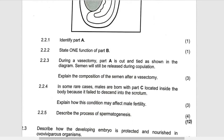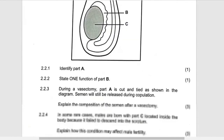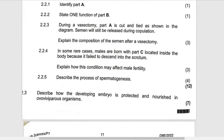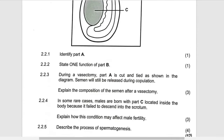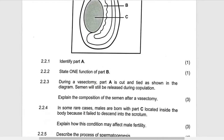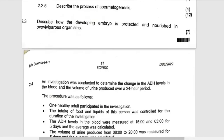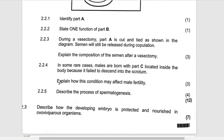Why? Because they won't be transported. And if they are not transported, what will be contained in the semen will only be the fluid coming from the accessory glands. The accessory glands are the prostate gland, Cowper's gland, and seminal vesicle — those are the three accessory glands which are supposed to be there.